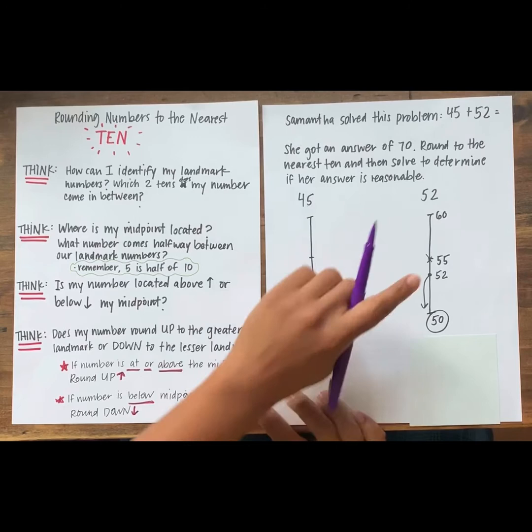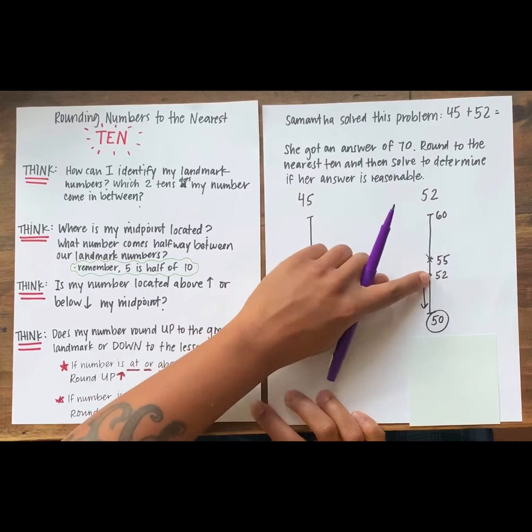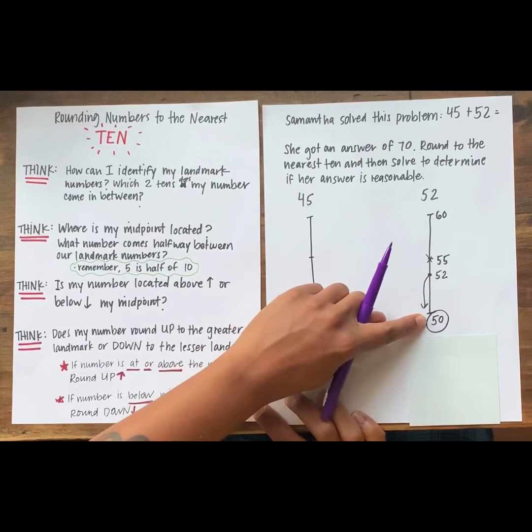Yes, they know that 52 is in between 50 and 60, and if we counted up from 52, the next multiple of 10, we would say, is 60. And if we counted back from 52, the lesser multiple of 10, we would say, is 50. Nice work.